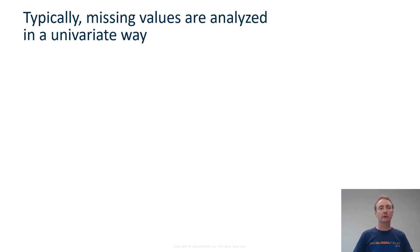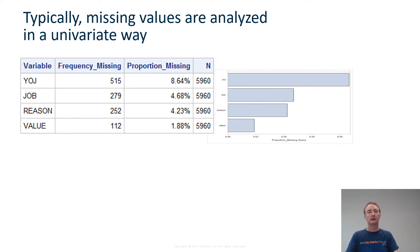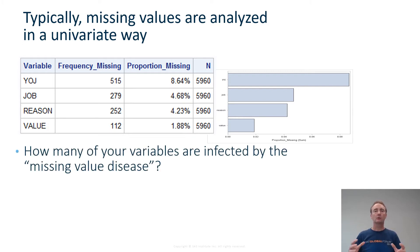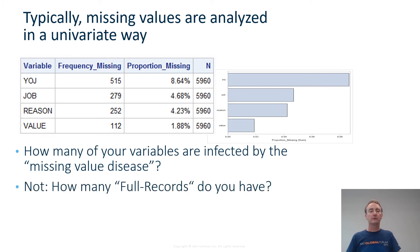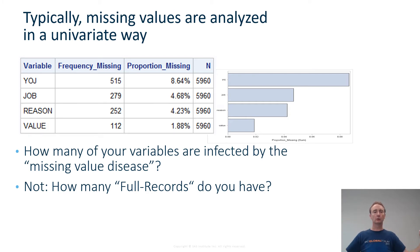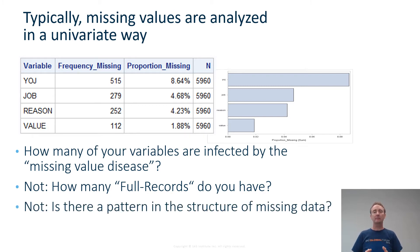The problem in general is that typically missing values are analyzed in a univariate way only. You very often see, for a certain number of variables, absolute and relative frequencies and bar charts. However, this information only gives you a small part of the full picture. It only tells you how many of your variables are infected by the missing value disease. You don't learn how many full records you have — how many customers in your data table have no missing value at all. You also don't get any information about whether there is a pattern in the structure of the missing data — maybe the missing values don't occur randomly, but systematically.